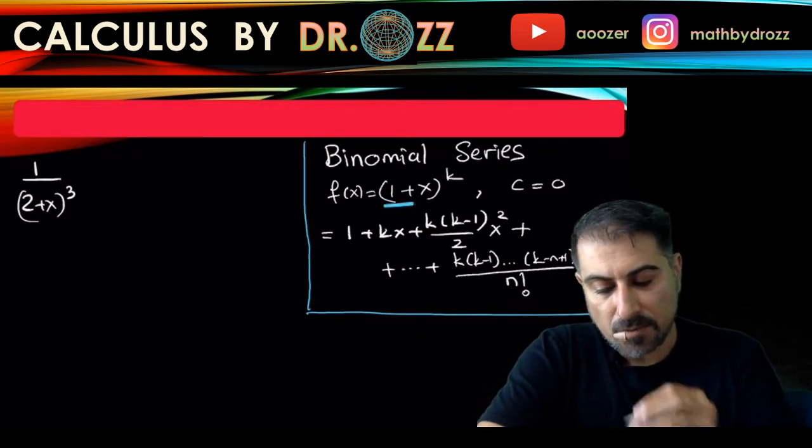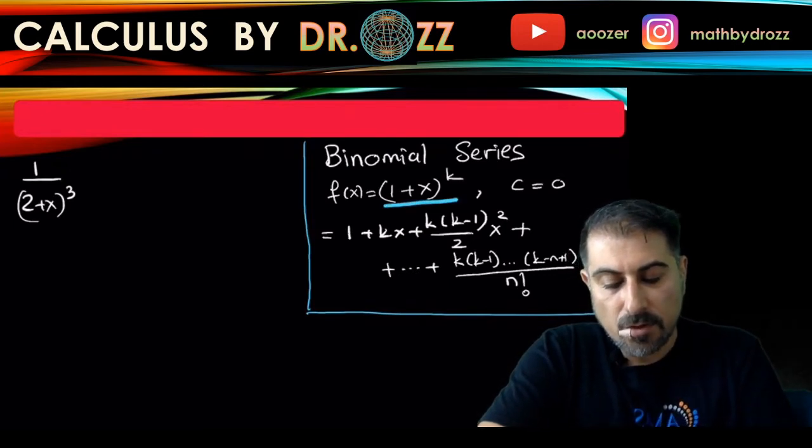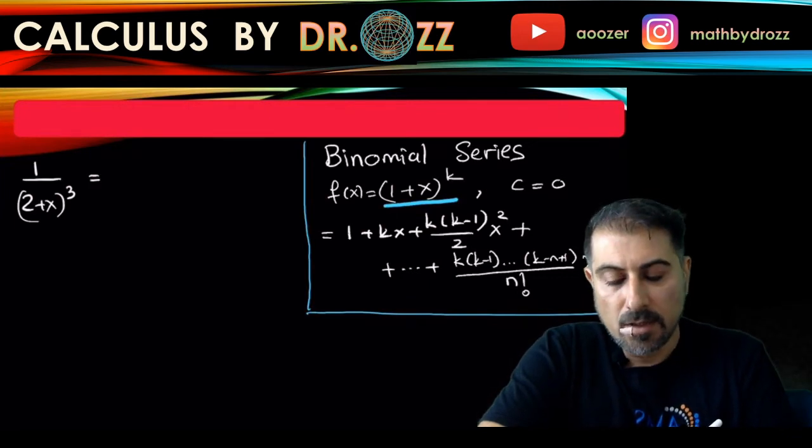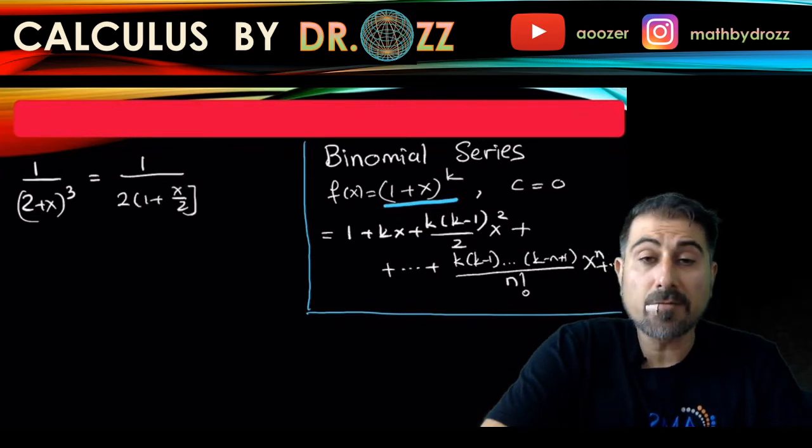So let's factor 2 out here. This is (1 + x/2) and then this is still the inner side of the cubic power.